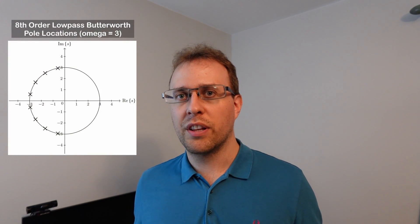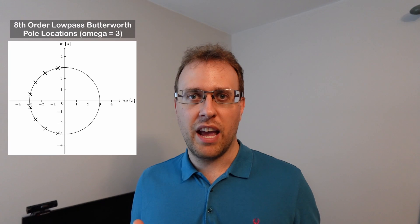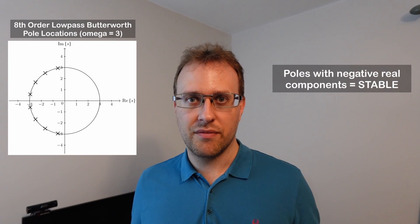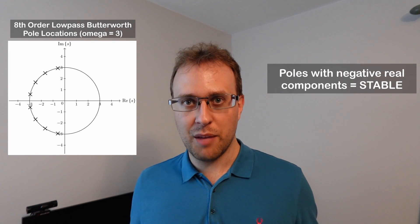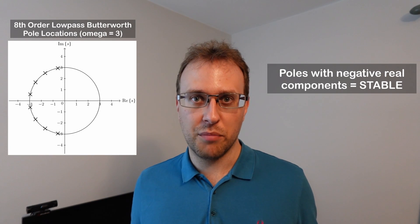Now let's get back to the Butterworth filter. For the low pass Butterworth filter, the pole locations are all in a semicircle on the left half of the imaginary s-axis. We can see that the filter is stable because all the poles have negative real components.